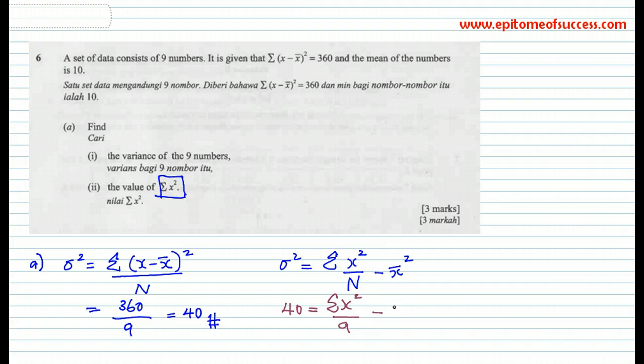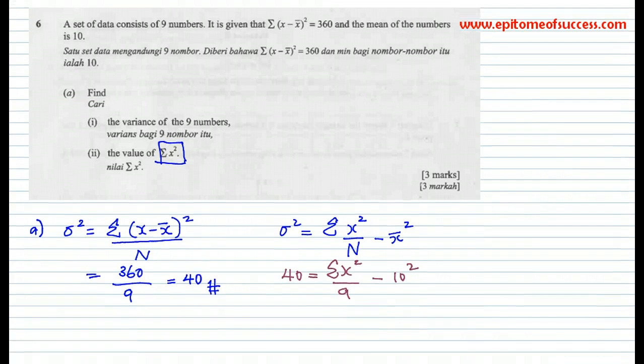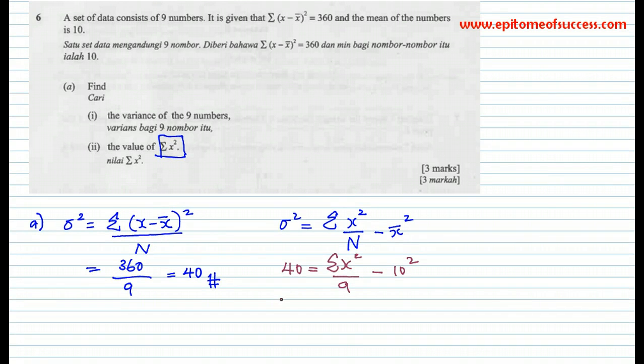You found the variance is 40. So you can put in here 40. This is what you're looking for. You do not know the sum of squares of the data, but the data is 9. And here is when you're going to make use of the mean. The mean of the number is 10, so it's minus 10 squared. If you solve this, you will get your answer. That's 40 plus 100 times 9 will give you sum of the squares of the data, which would be 1260. That's how you get your 3 marks for a paper 2 question.